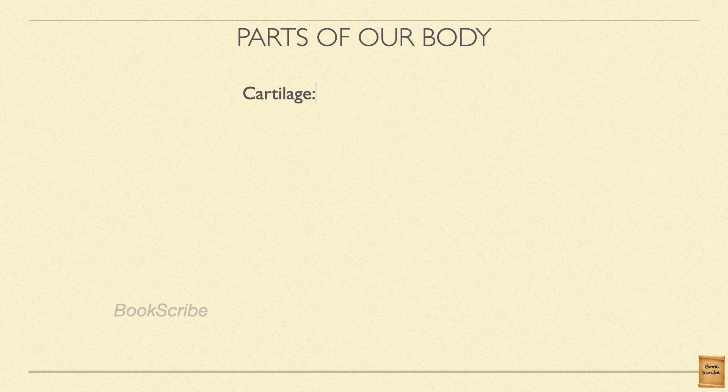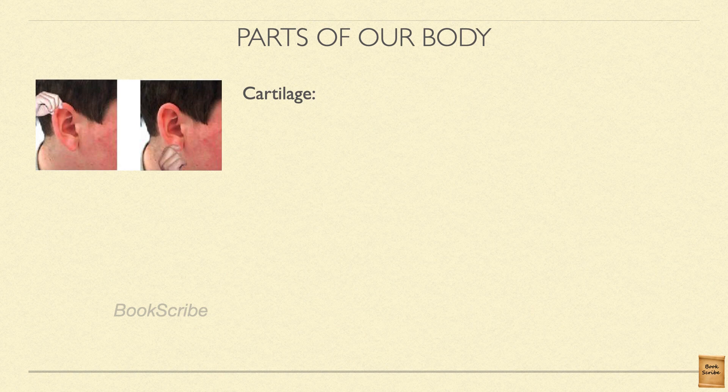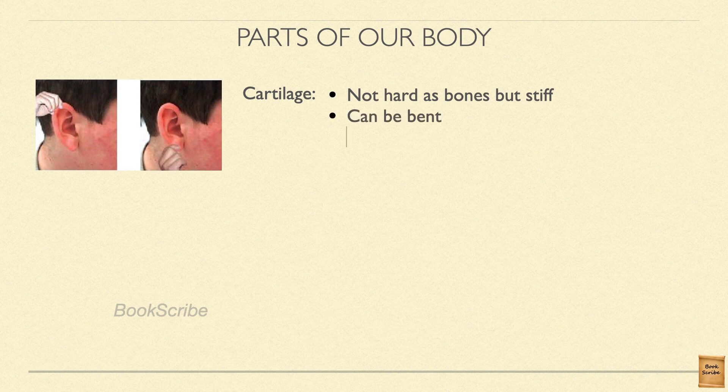We have seen bones and joints, which form parts of our skeletal system. We also have other parts of our skeletal system that are not as hard as our bones but can be bent. These are called cartilage. Try to feel your ear — the lower part will be very soft, and the upper part will be a little bit harder but not very hard like bone; you can still bend them. These parts are called cartilage. Even in the joints of our body, you can find cartilage.